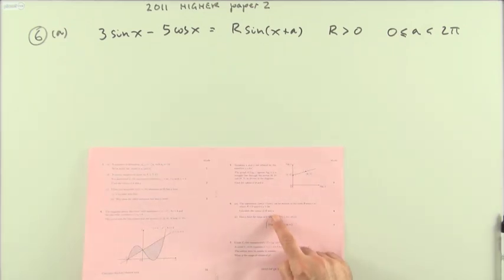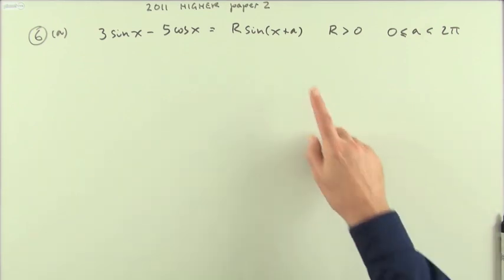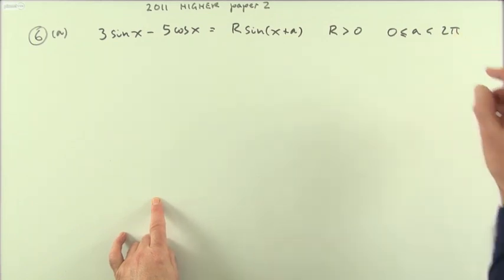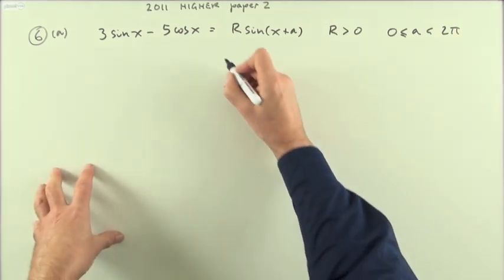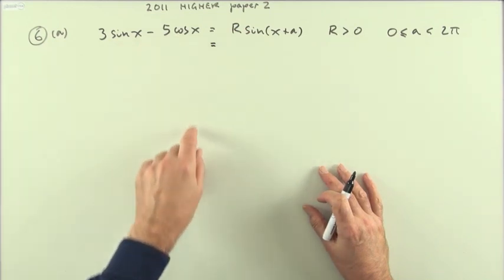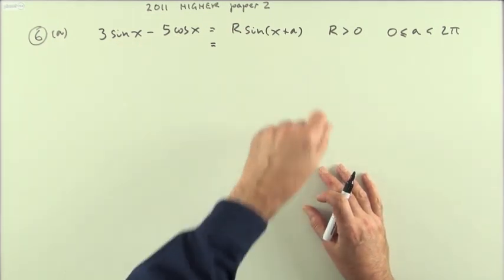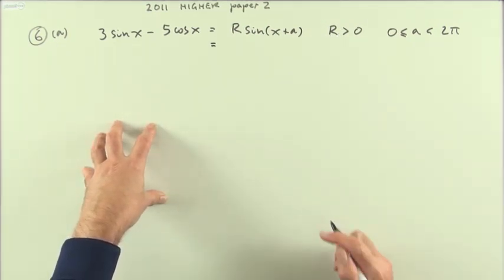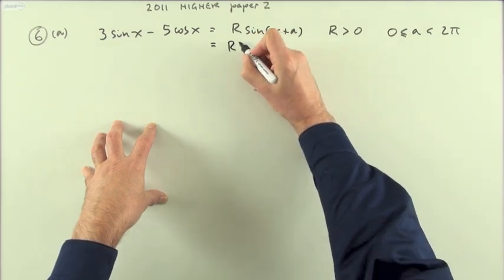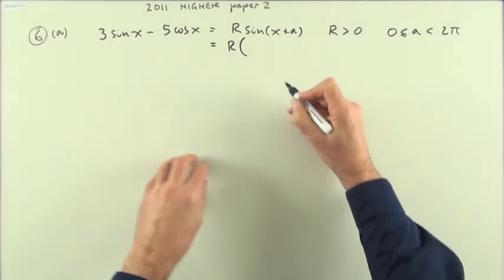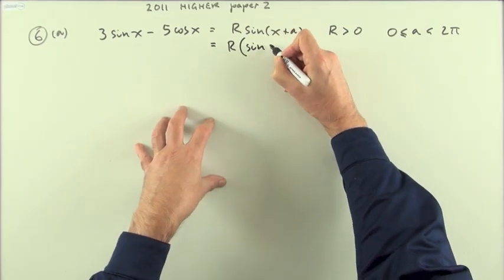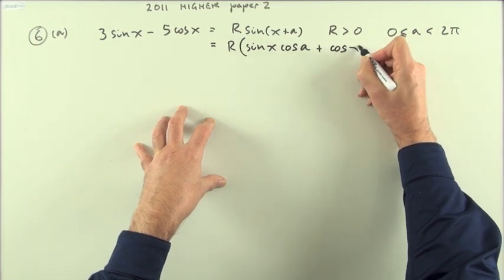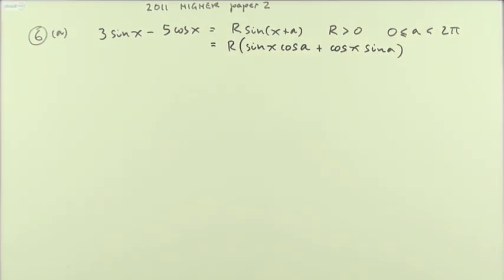Find the values of r and a. Notice it's all in radians — there's no degree signs present anywhere, confirmed by two pi rather than 360. The first part is to change these two terms into a single trigonometrical term with a phase angle in it. Use the expansion of the expression you're aiming for — keep the r out for now and expand sine of the sum: sine of x times cos of a, plus cos of x times sine of a.